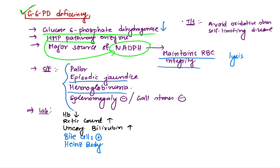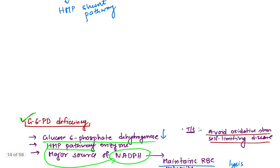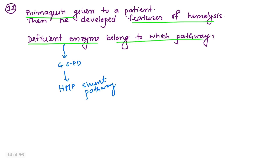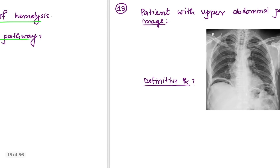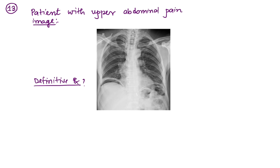Lab features show decreased hemoglobin, increased reticulocyte count, increased unconjugated bilirubin, along with specific cells — bite cells and Heinz bodies. Treatment is avoidance of oxidative stress and hemolytic drugs. This is usually a self-limiting disease, so avoid primaquine and other hemolytic drugs. The answer is HMP shunt pathway — the deficient enzyme belongs to the HMP shunt pathway.